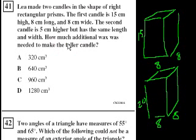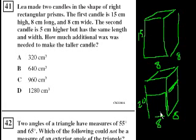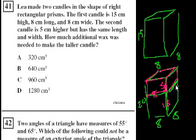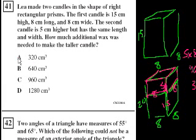How much additional wax was needed to make the taller candle? We just have to find how much incremental volume was created by making that section 5 centimeters higher. This candle goes up 15 centimeters, and we added 5 on top. So the volume of that extra section is 8 by 8 by 5: 5 times 8 is 40, times 8 is 320 cubic centimeters.